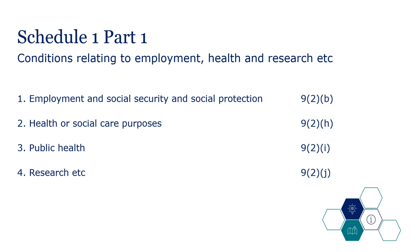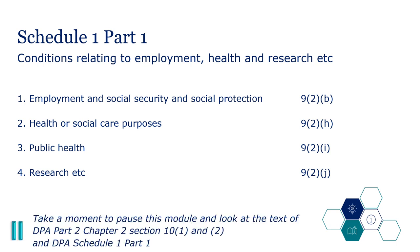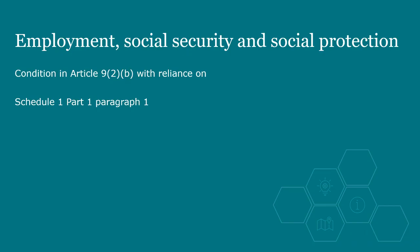Schedule 1 Part 1 of the DPA provides four separate conditions for this processing in four separate paragraphs — one paragraph for each of the Article 9 conditions B, H, I and J. Take a moment to pause this module and look at Section 10 and Schedule 1 Part 1 in the DPA. We will now look at each of the four Schedule 1 paragraphs in turn, with an example for each.